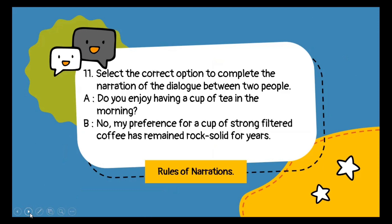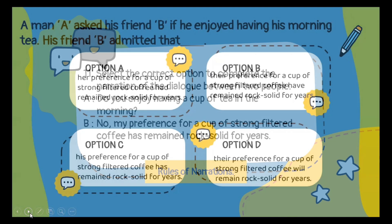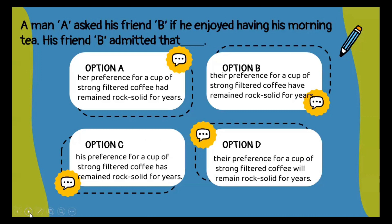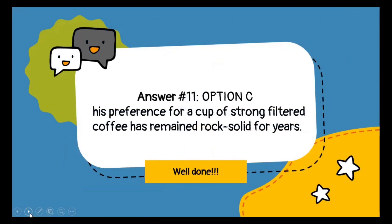Question number eleven is again based on a conversation where two men are talking. Person A says, 'Do you enjoy having a cup of tea in the morning?' Person B says, 'No, my preference for a cup of strong filtered coffee has remained rock solid for years.' Whenever there is a conversation, apply the rules of narration. You have to fill in the blank: 'Man A asked his friend B if he enjoyed having his morning tea. His friend B admitted that dash.' Option number C is the correct option because it is a habit and the tense remains in present.